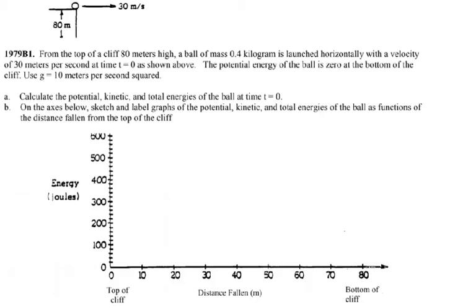This is the 1979 AP Physics B question. From the top of a cliff with height 80 meters, a ball of mass 0.4 kilograms is launched horizontally with a velocity of 30 meters per second at time t equals 0. The potential energy of the ball is 0 at the bottom of the cliff. Assume acceleration due to gravity is 10 meters per second squared.